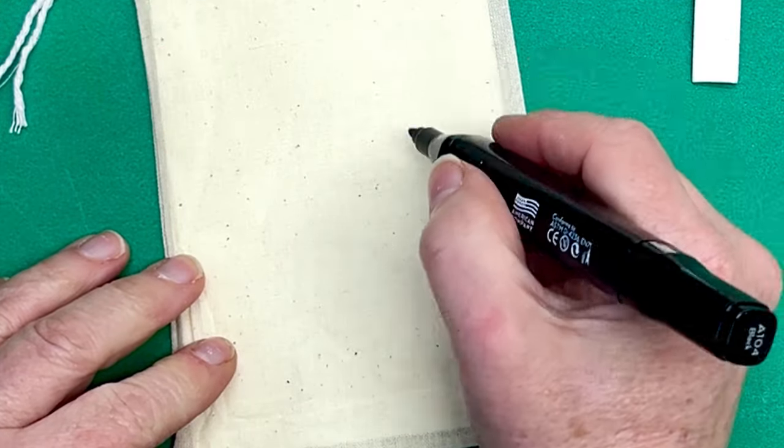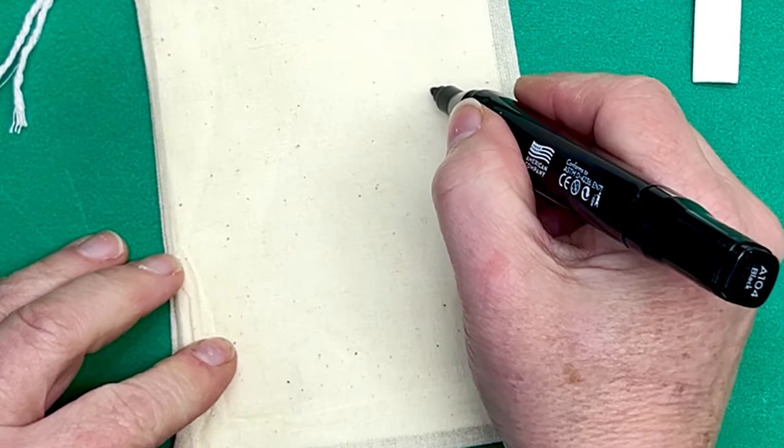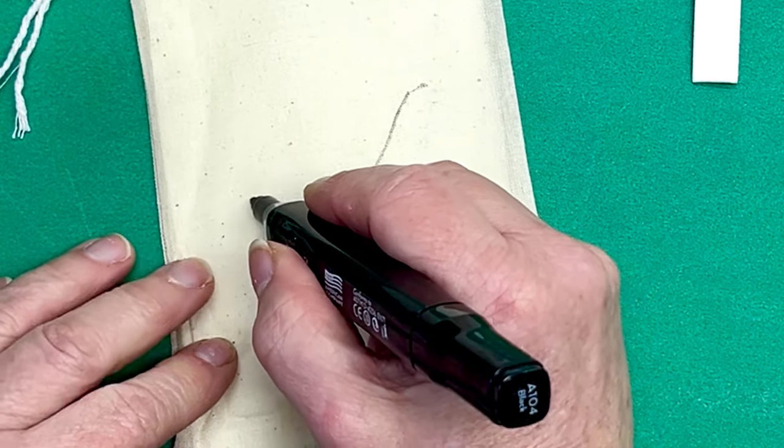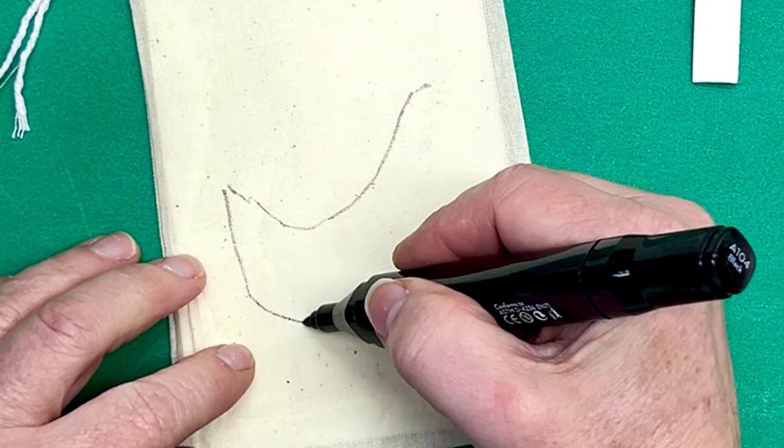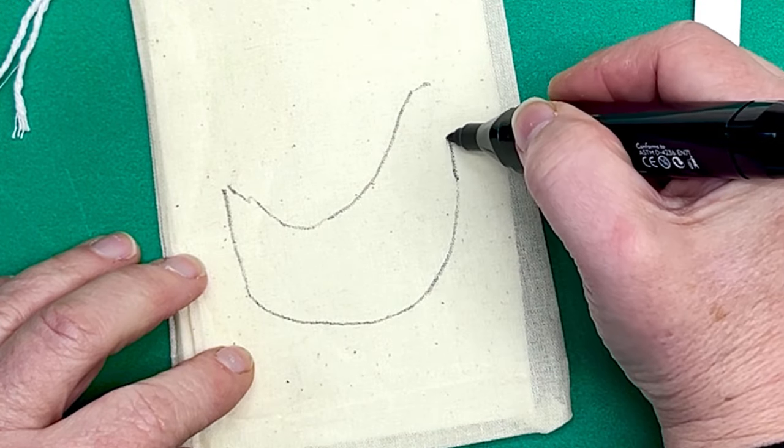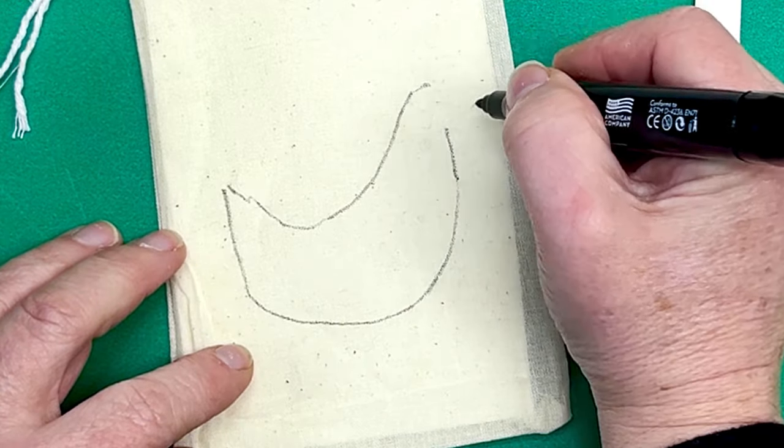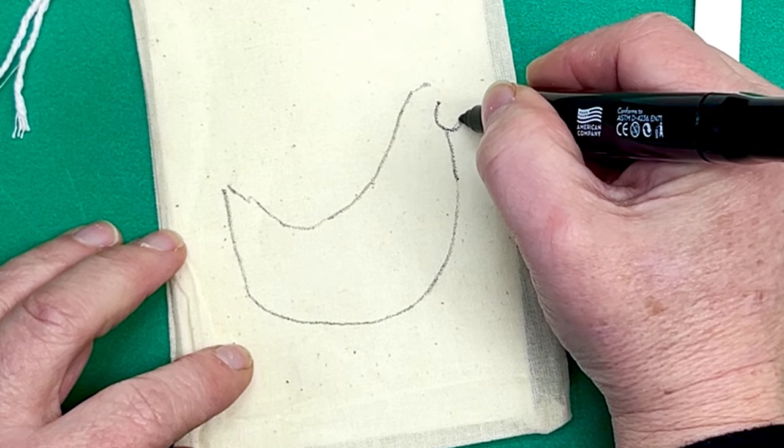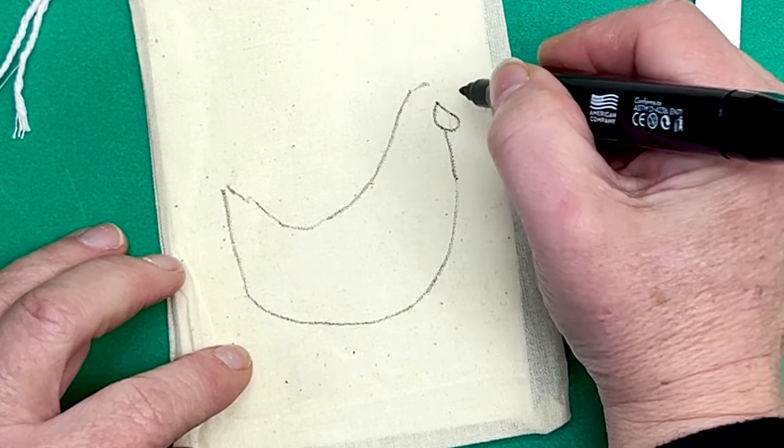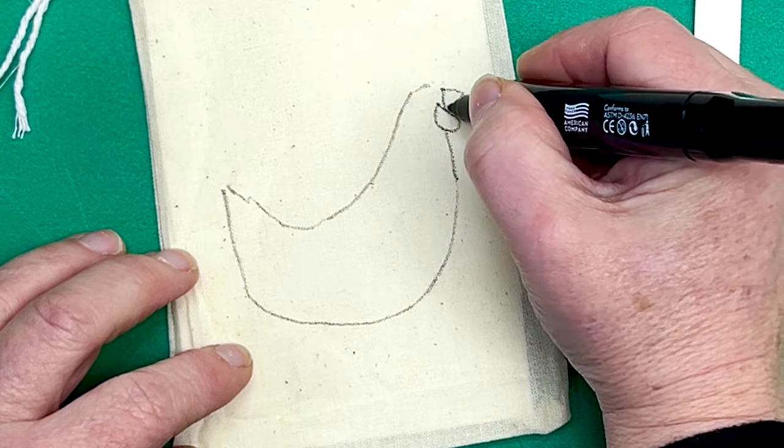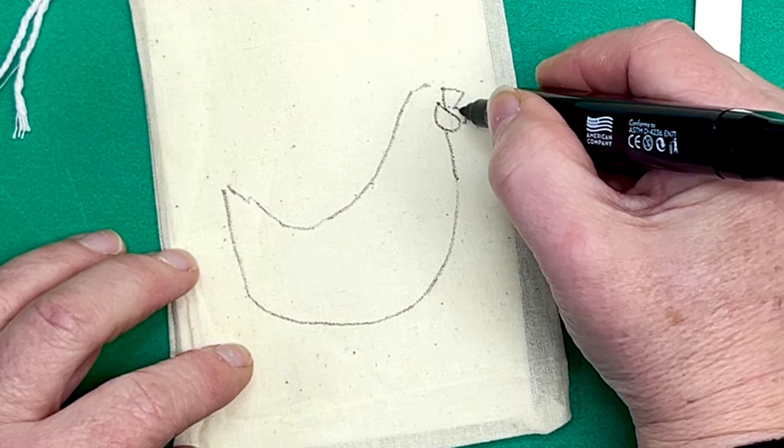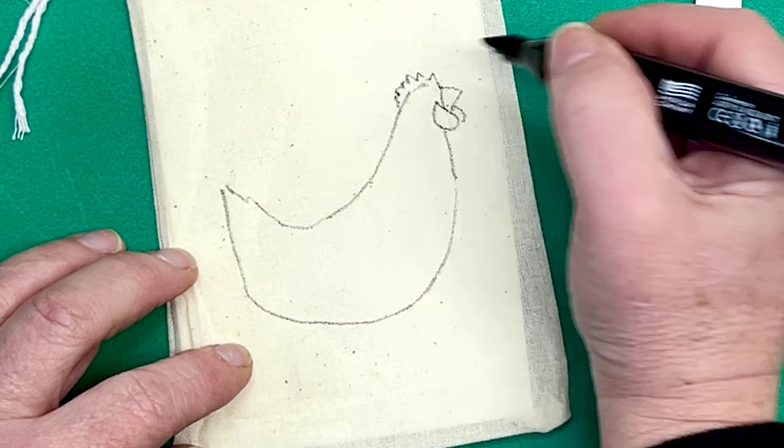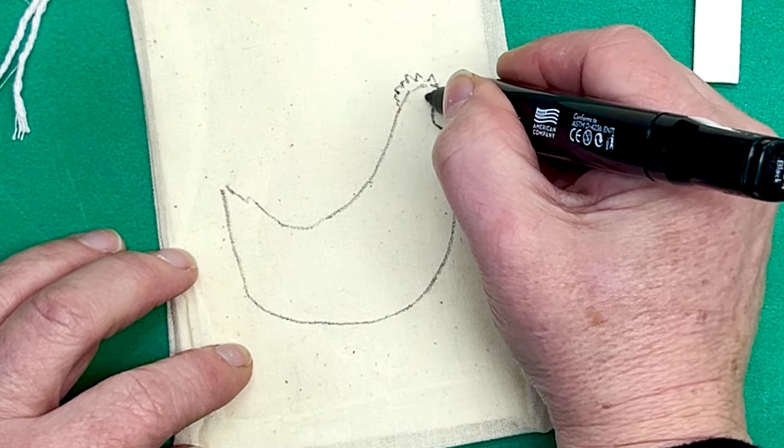So my little chicken, the little head's gonna start up here and then it's gonna come down and come up to the tail and around. I'm gonna stop before I get all the way to the top so that way I can put a little waddle and then the beak and then another little waddle.